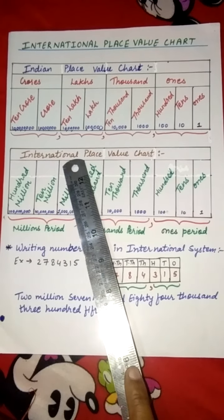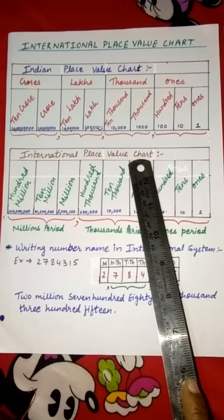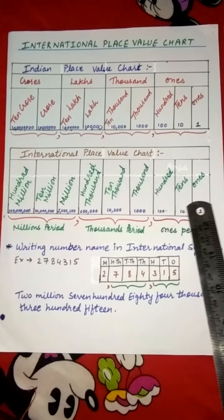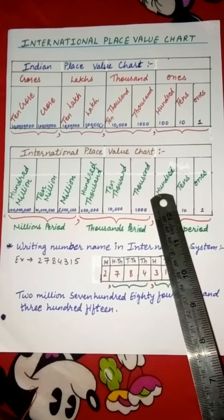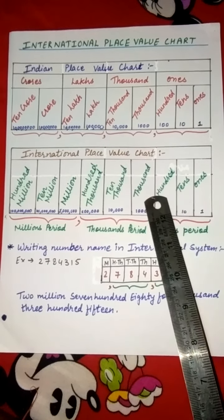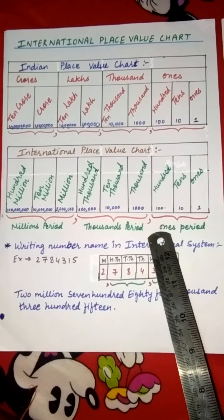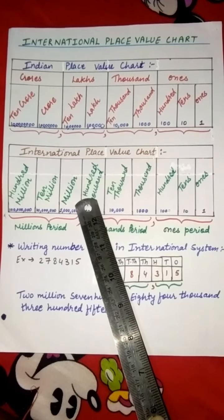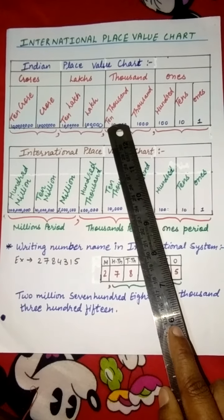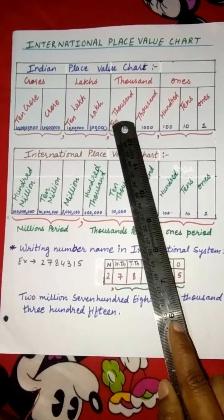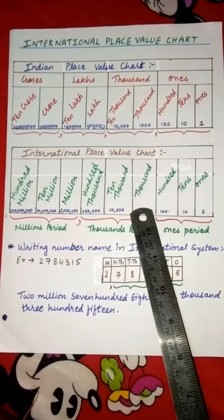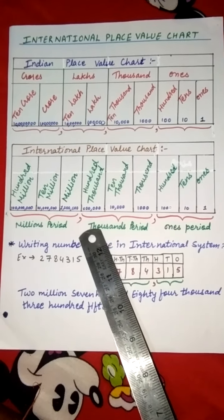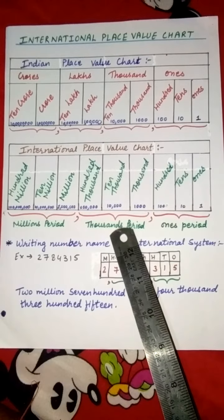And you can see this is our international place value system chart. In the international place value system there is a difference. It starts from 1's, 10's, 100's — this is called the 1's period. Then comes 1000, 10,000, and 100,000. In the Indian place value system there is no 100,000 — there is 10,000 and lakh. But in the international place value system there is 1000, 10,000, and 100,000. These three are called the thousands period.